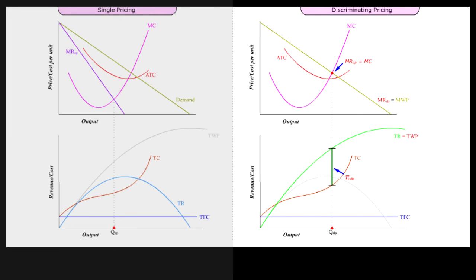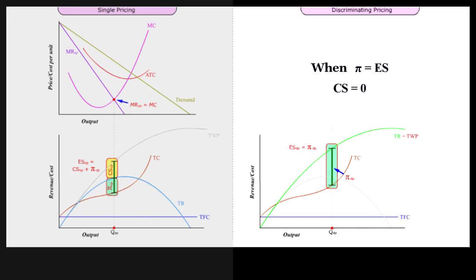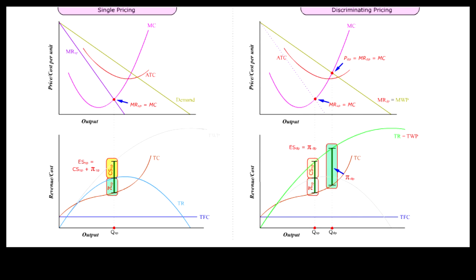Under discriminating pricing, economic profit is measured by TWP minus TC at any given output level. At maximum profit output QDP where MR equals MC, economic profit equals PIDP. But TWP minus TC also measures the economic surplus. Since PDP is equal to MC at QDP, economic surplus ESDP is also maximized. When ESDP equals PIDP, consumer surplus is equal to zero. Therefore, under discriminating pricing, higher economic profit and higher output level is achieved at the expense of consumer surplus compared with single pricing.